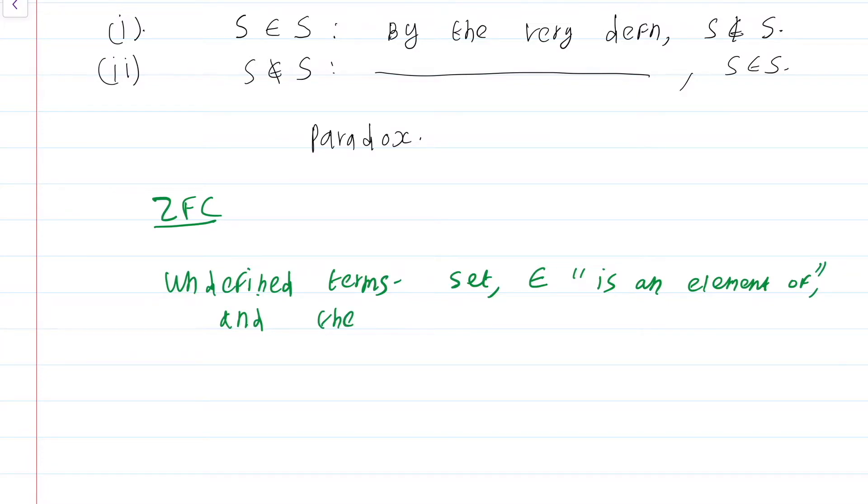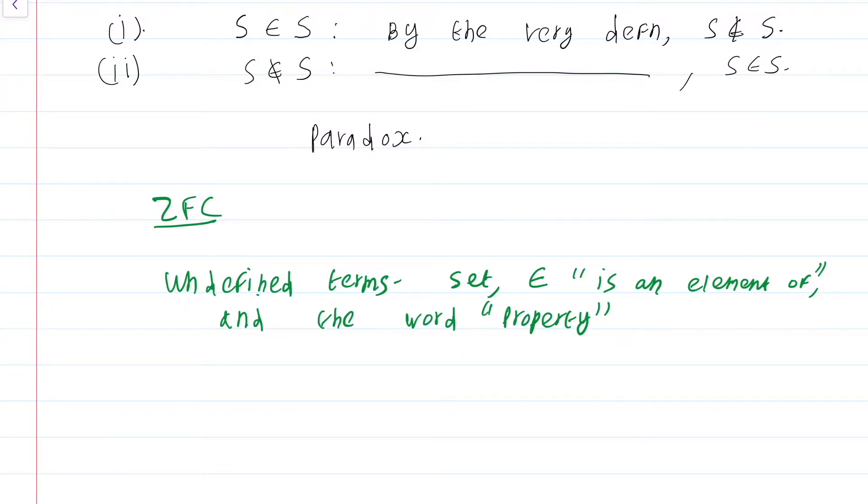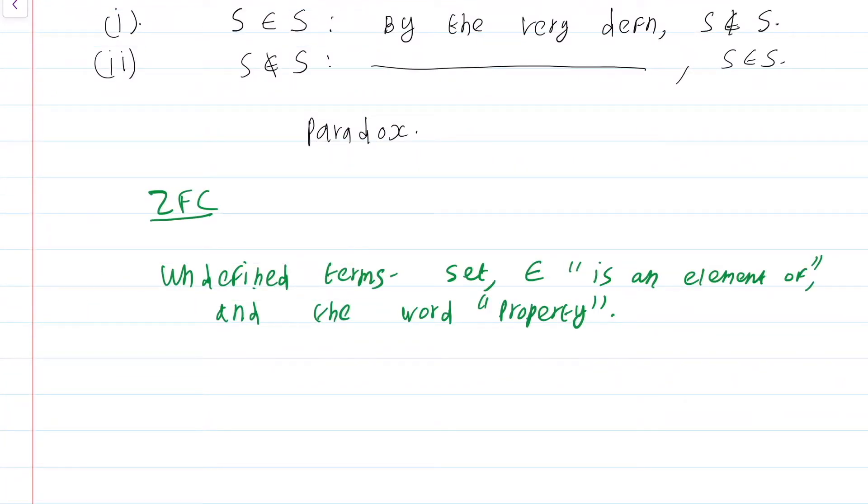the relation is an element of and property. Now, the word property is an undefined term only in this course. Remember, I just told that Ernst Zermelo's axioms were modified by Thoralf Skolem and Abraham Fraenkel. Their work is primarily to make what this property means more precise using mathematical logic. In a course that deals more with mathematical logic, you will see a precise definition of what a property is.